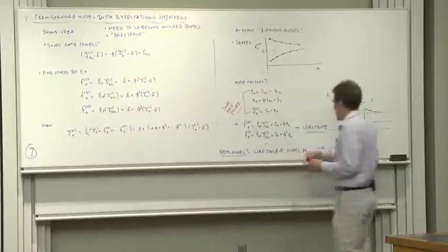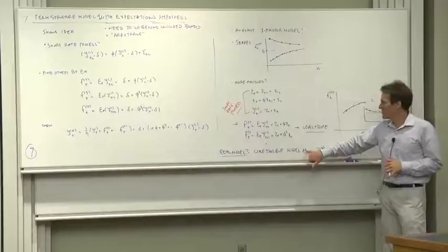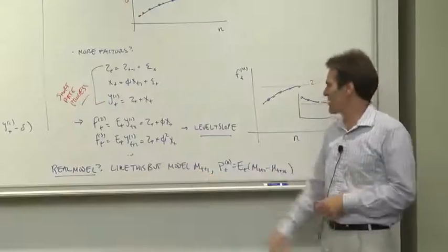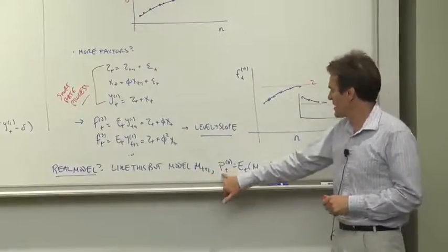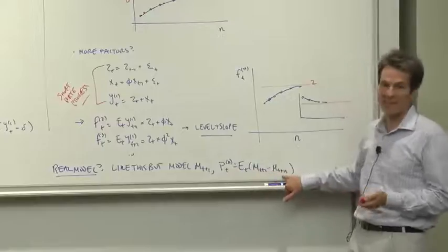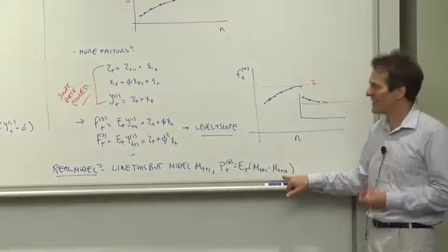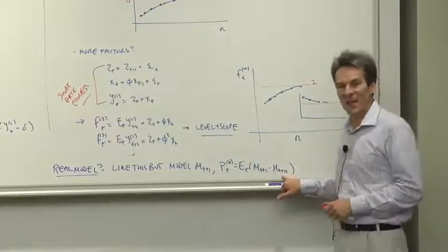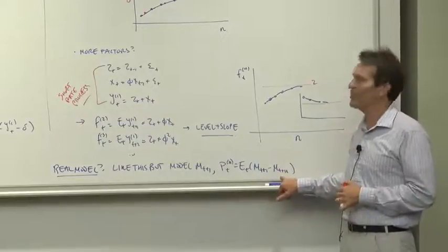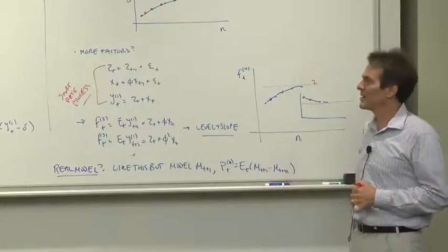We're going to write down a short rate process, and then we're going to price all the other securities. But what we're really going to write down is a model for the discount factor, which will generate short rates and also market prices of risk. And then we are going to price other securities by their expected discounted payoffs. We're going to do it right. All it does is it costs us some algebra, but it gets the one-half sigma squared terms where they belong, which is important in this model.